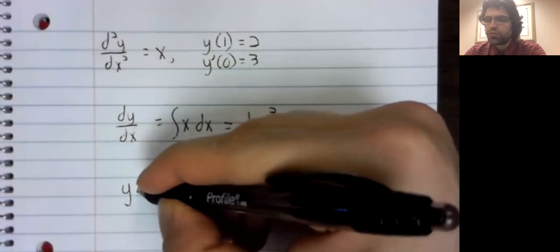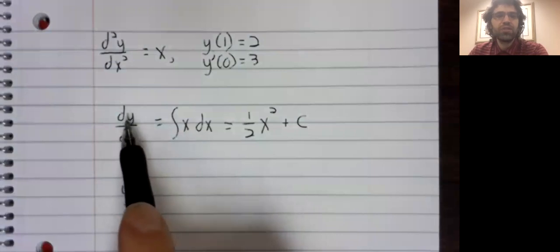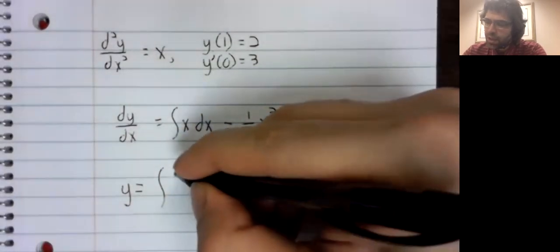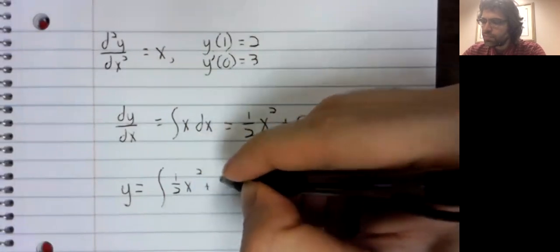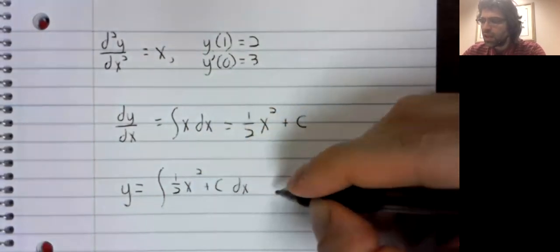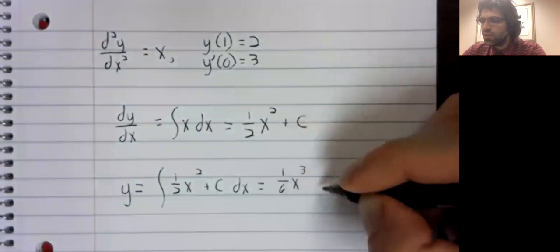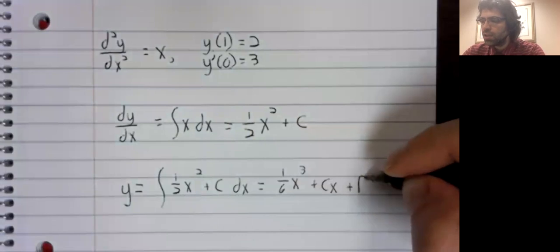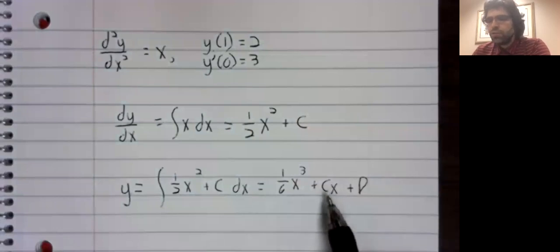Once again, integration undoes differentiation. So if we integrate this side, we get y. And if we integrate the right-hand side, we get this cubic polynomial. And you see we have two unknowns.